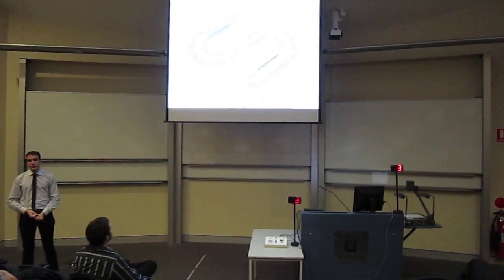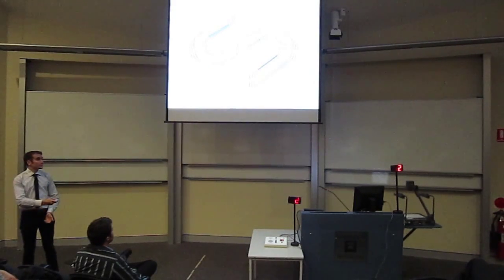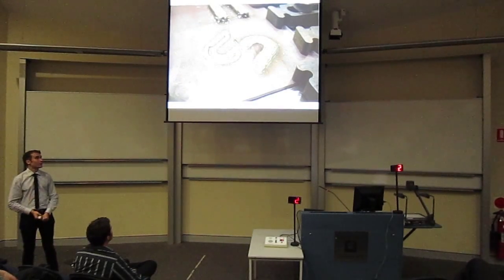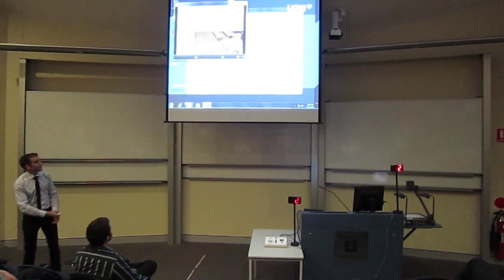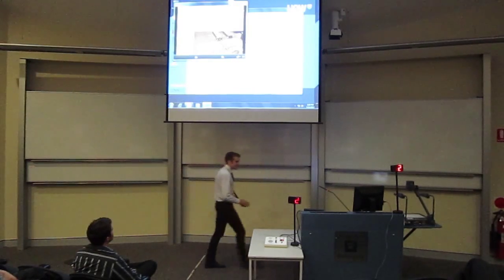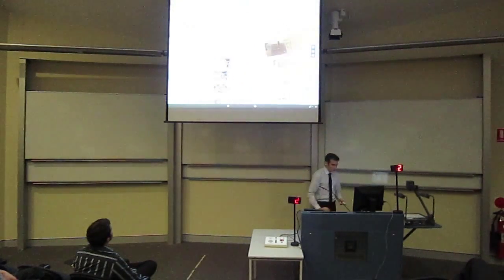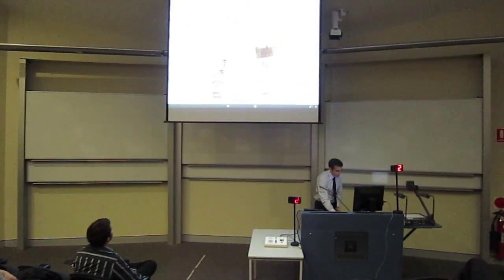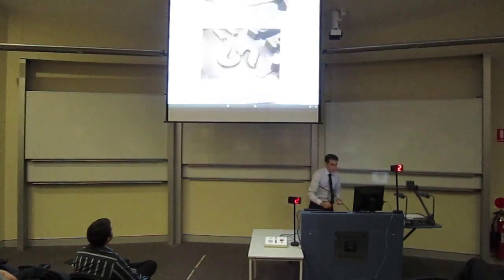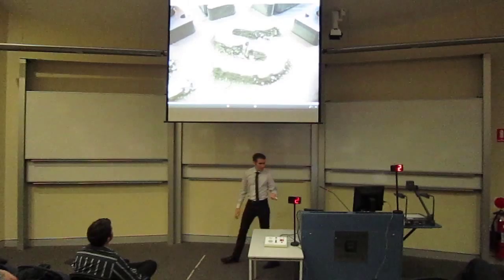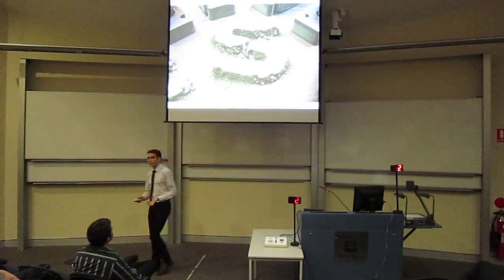Here are the tool paths generated by the software for this part. Here's the part partway through the deposition of the first layer. Here you can see the same part after a few layers have been deposited. And here's the final part after it's been built up significantly. As you can see, there's a significant amount of weld spatter, but that can be addressed by tuning the weld settings, and it's not a major problem.